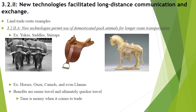Now, 3.2.2 — new technologies facilitating long-distance communication and exchange. The first category is land route examples. 3.2.2a looks at new technologies permitting the use of domesticated pack animals for longer route transportation. The three basic examples are yokes, saddles, and stirrups — there's a picture of each one. Yokes for oxen and large animals, saddles for horses or camels to be ridden, and stirrups — the little foot-rests that go on the bottom of a saddle.